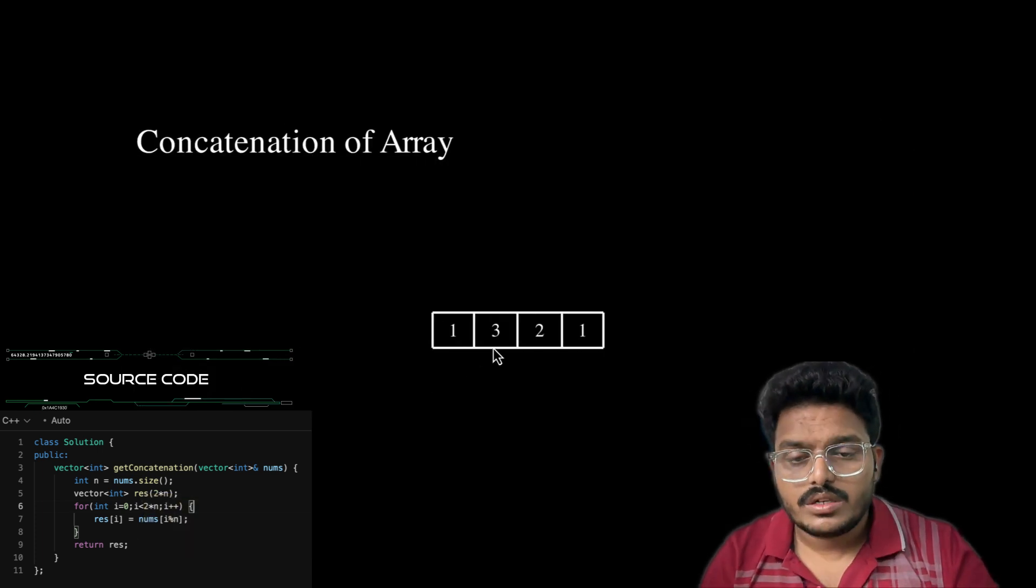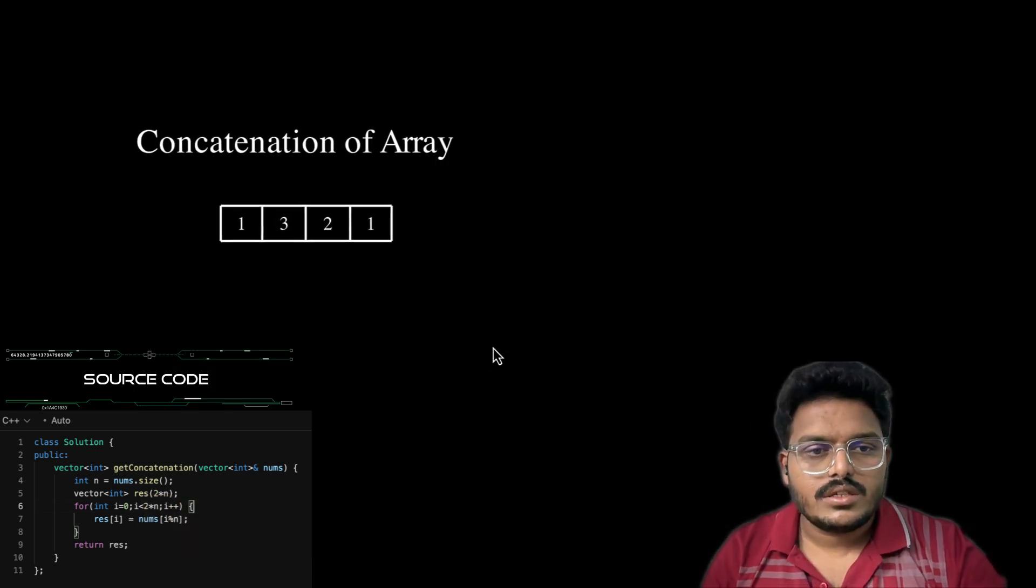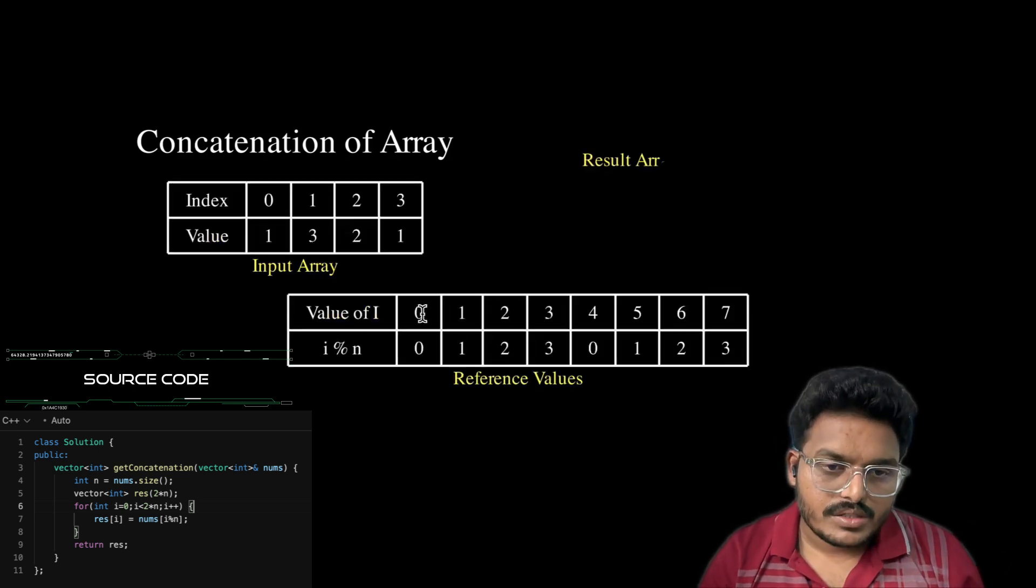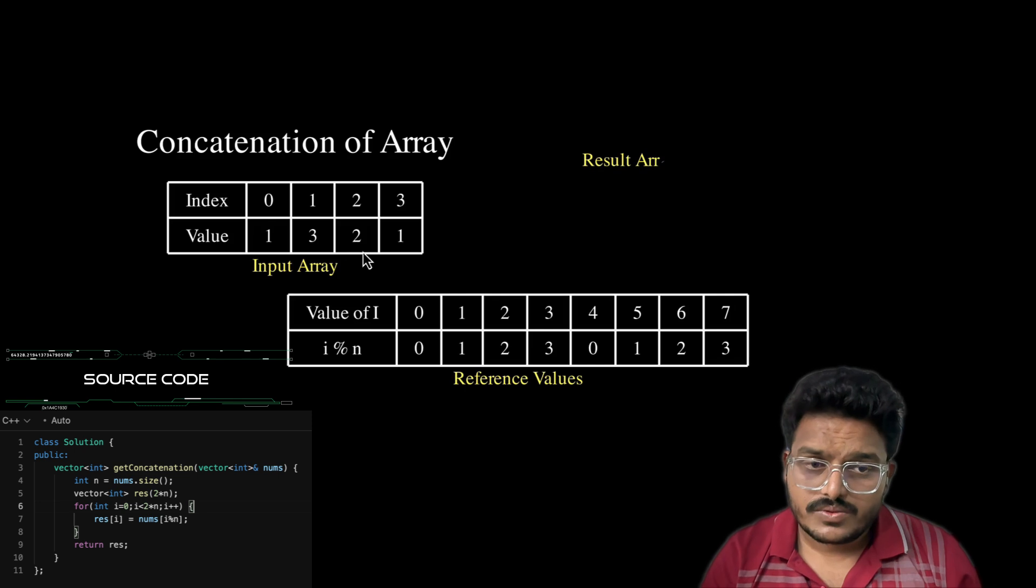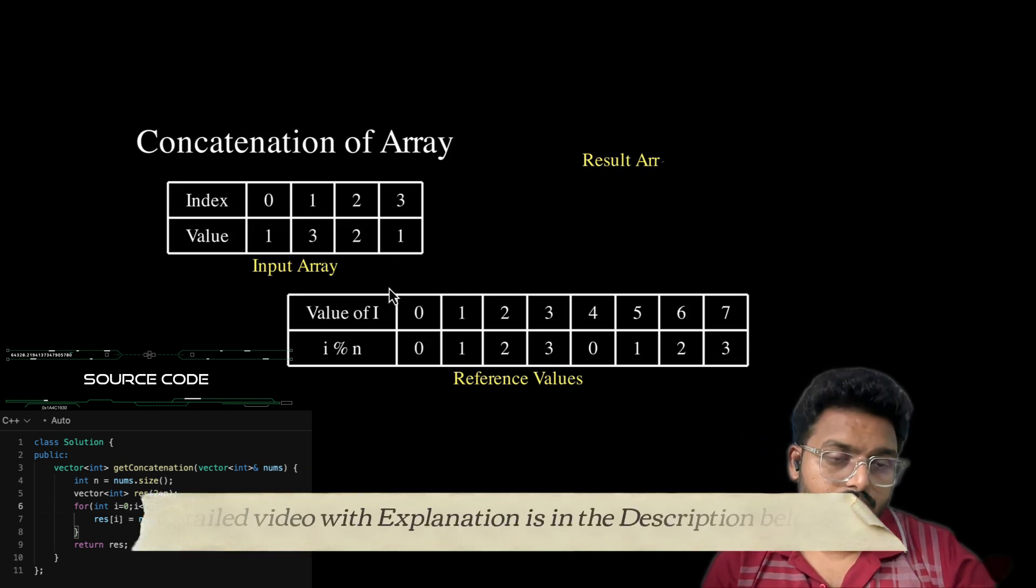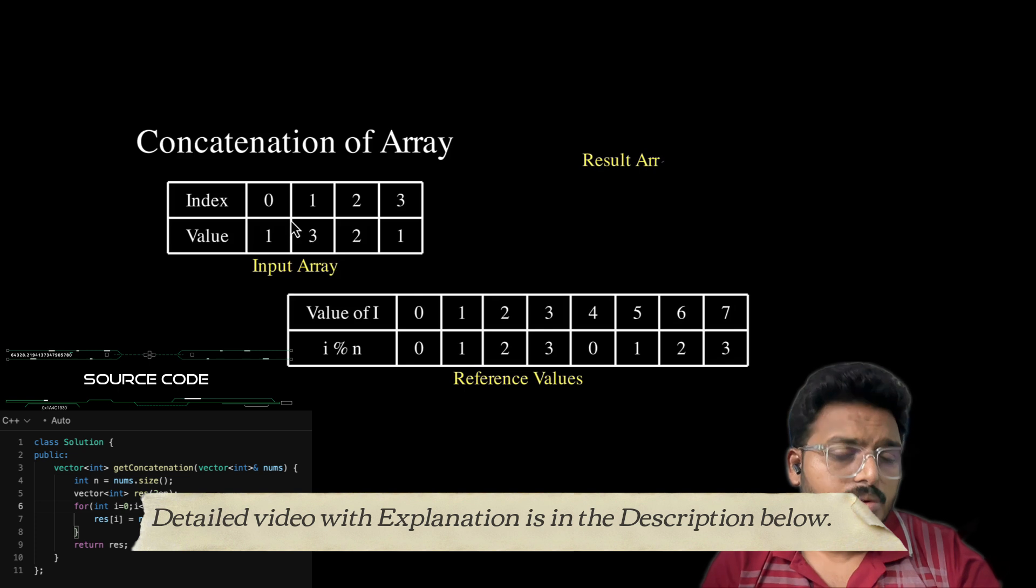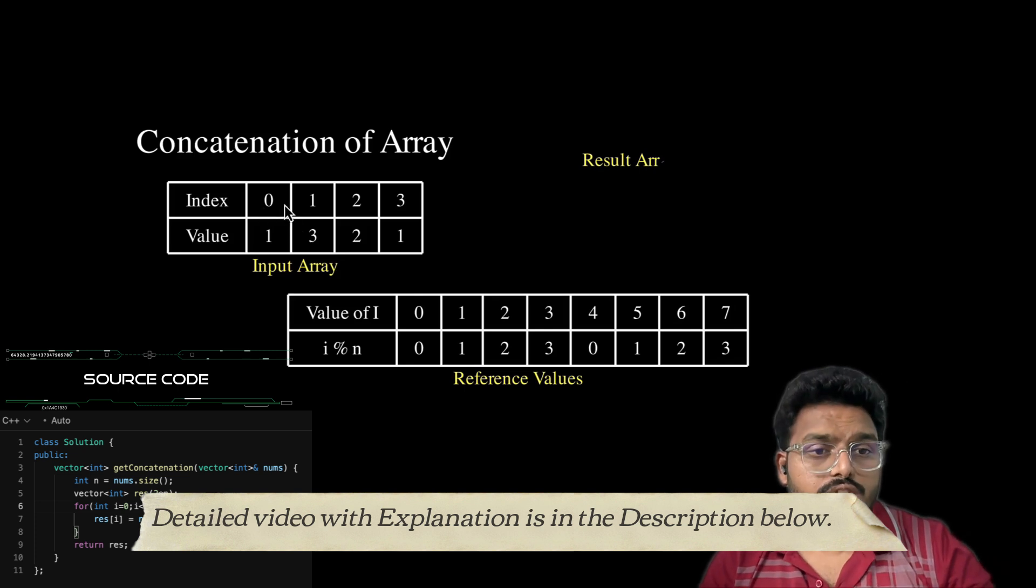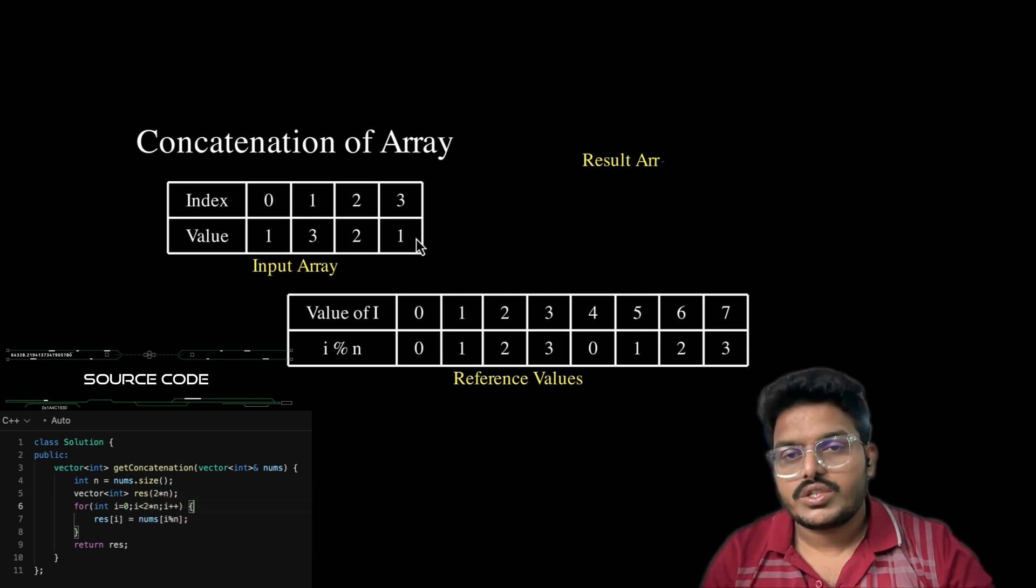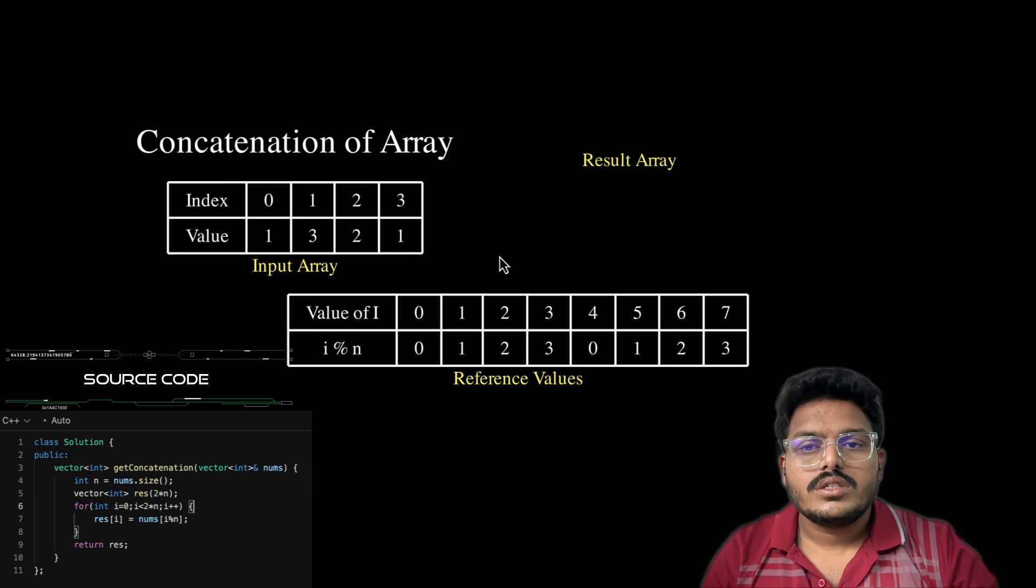Let's take that input. Here we have the reference values. For i mod the length, the length is 4, so i mod 4. I already explained this in the beginning of the video. This is our input: indices 0, 1, 2, 3, and values 1, 3, 2, 1. These are the i values and these are the actual input values.